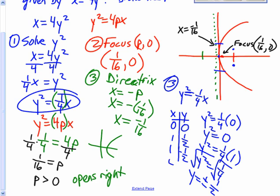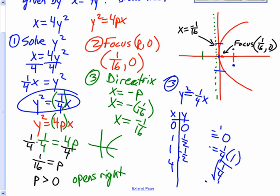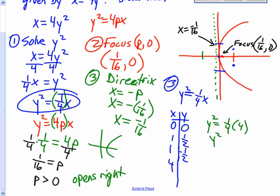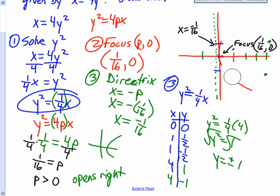Next I'll plug in 4, because 4 divided by 4 gives a nice value. y squared equals one-fourth times 4 equals 1, so y equals plus or minus 1. That gives points (4, 1) and (4, negative 1). Now I've got enough points to draw the parabola opening to the right.